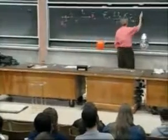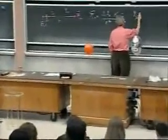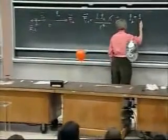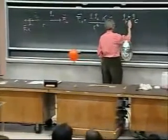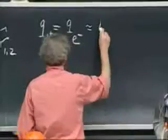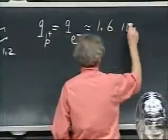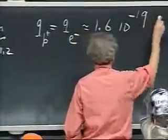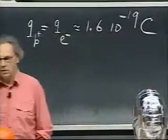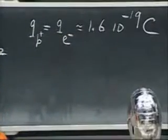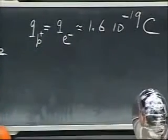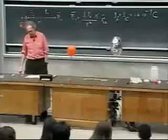The charge of one proton, which is exactly the same as the charge of one electron, is approximately 1.6 times 10 to the minus 19 Coulomb. So one Coulomb is something like six times 10 to the 18 protons or electrons if the charge is negative.